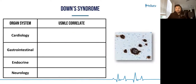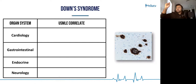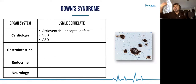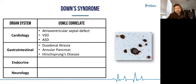Let's break down Down syndrome in a systems-based manner. From a cardiology standpoint, we discussed atrioventricular septal defects, also called endocardial cushion defects. You're also going to have membranous VSDs and an ostium primum ASD. From a GI standpoint, think about duodenal atresia — remember double bubble and bilious emesis — annular pancreas, and Hirschsprung's disease.